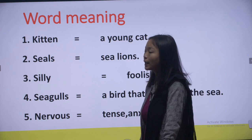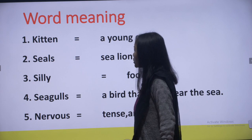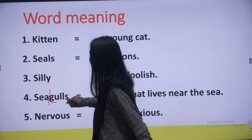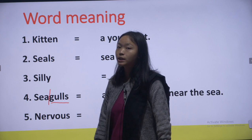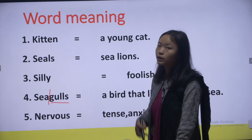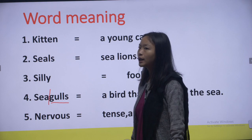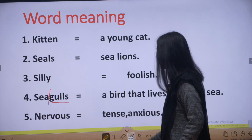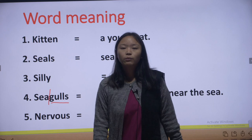Number four: seagulls — S-E-A-G-U-L-L-S. To remember the spelling, break it down: 'sea' and 'gulls'. A seagull is a bird that lives near the sea and feeds on fish. Next, nervous — N-E-R-V-O-U-S, which means tense or anxious. A-N-X-I-O-U-S, anxious — it means ghabrana.